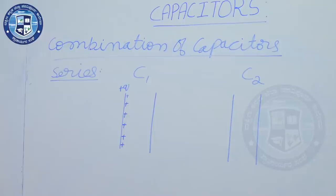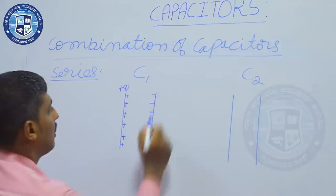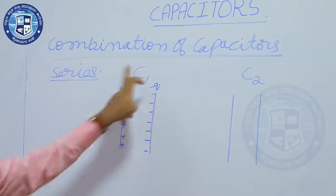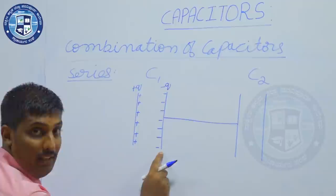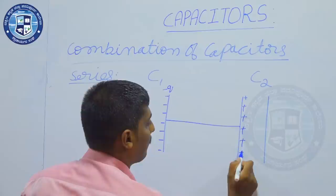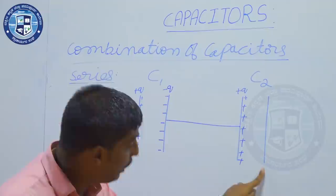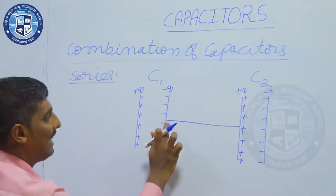We know that the positive plate induces an equal amount of negative charges on the nearer end. So the right plate of C1 has minus Q charge, so that the net charge of the capacitor is zero. Now the right plate of C1 is connected to the left plate of C2. That will have equal positive charges — plus Q — which induces equal negative charges, minus Q, on the right plate of C2.